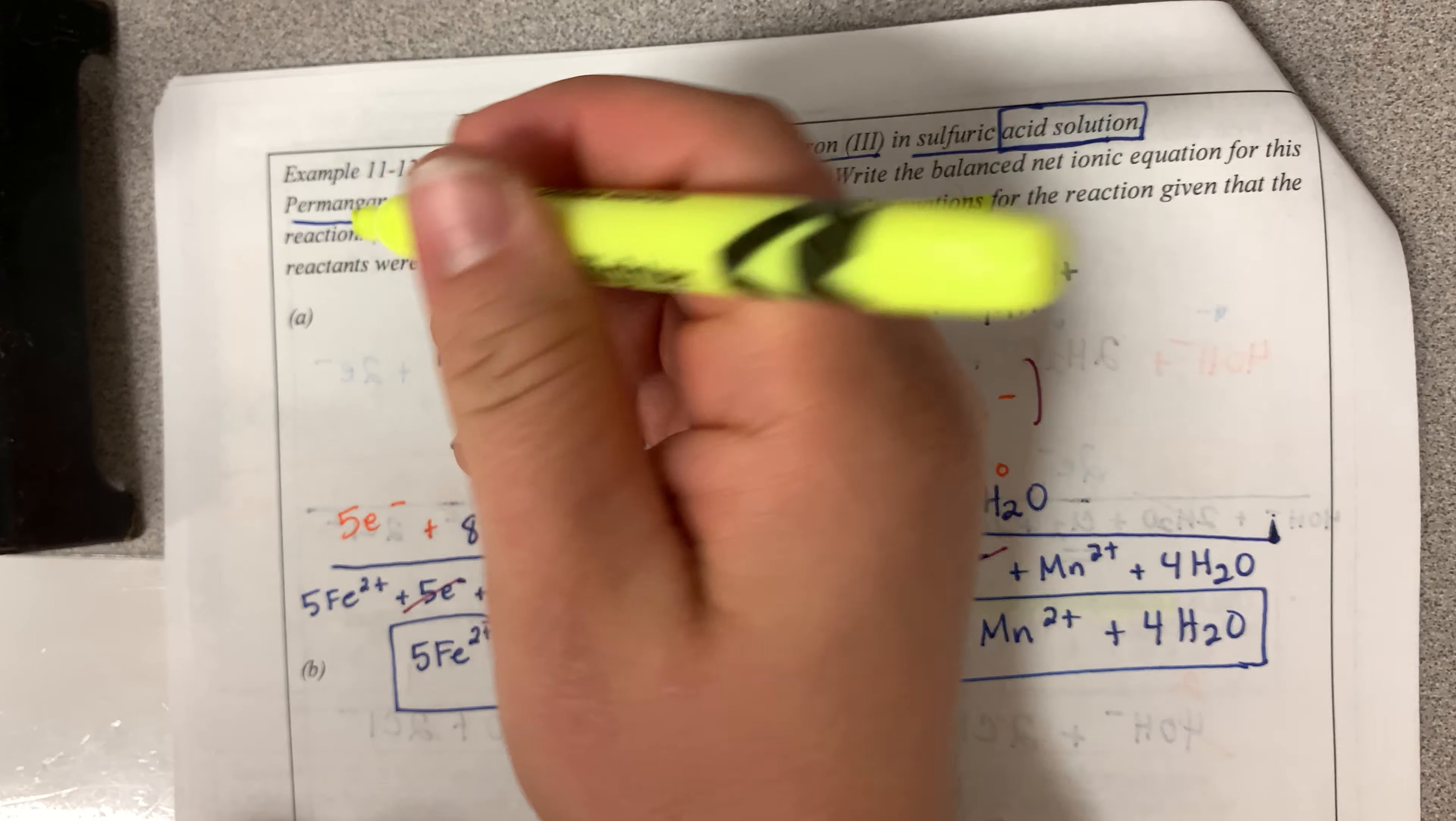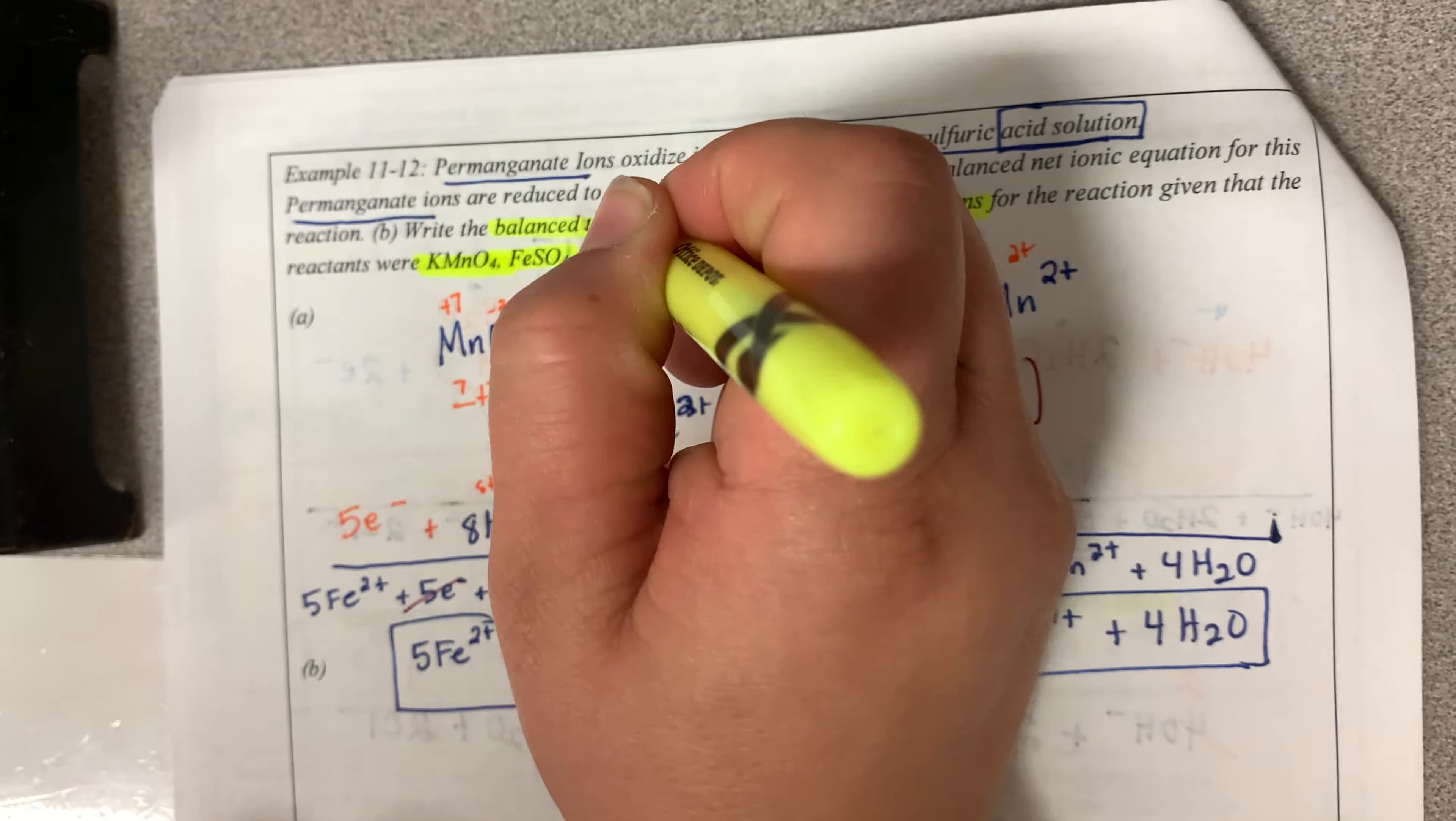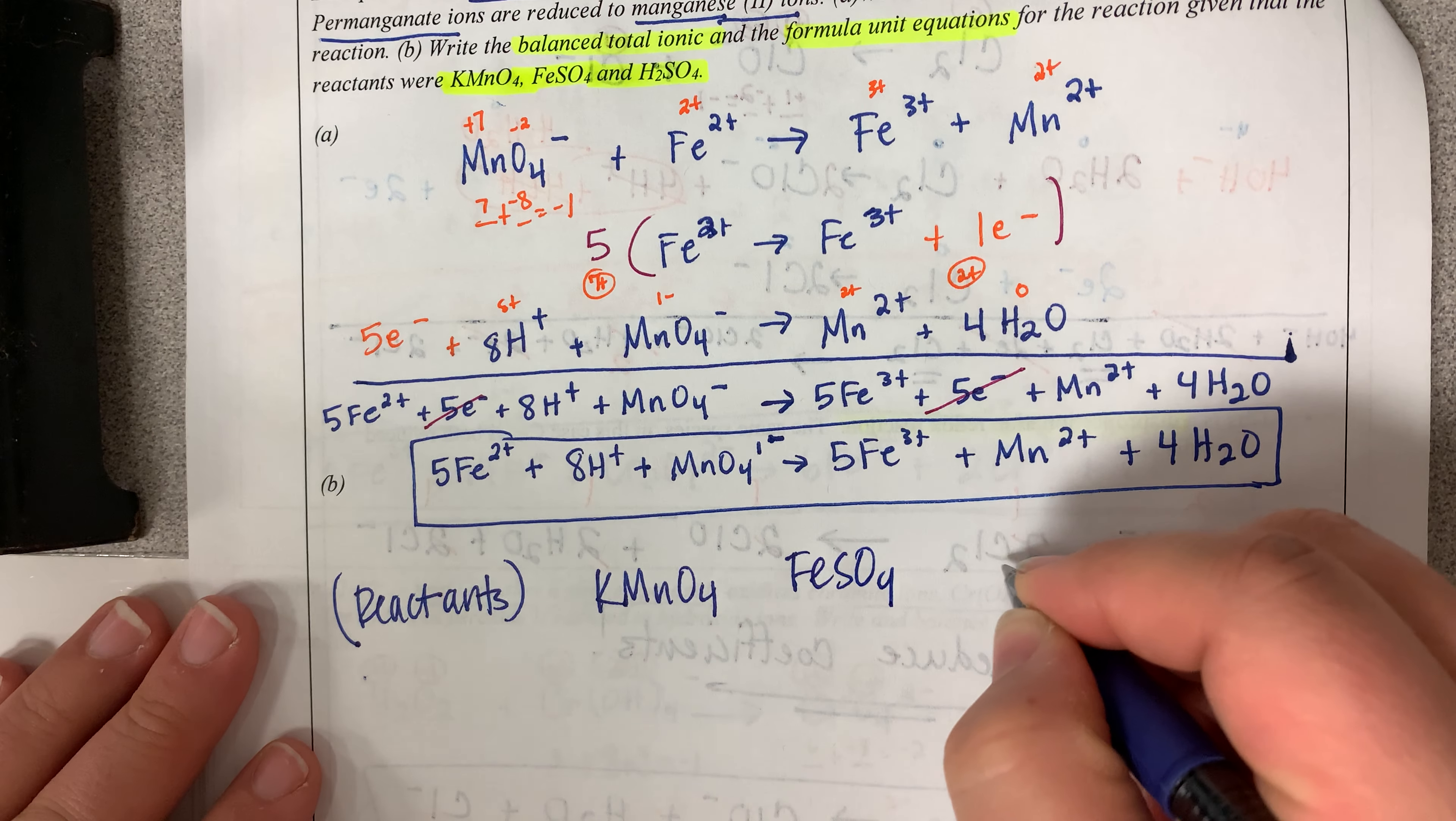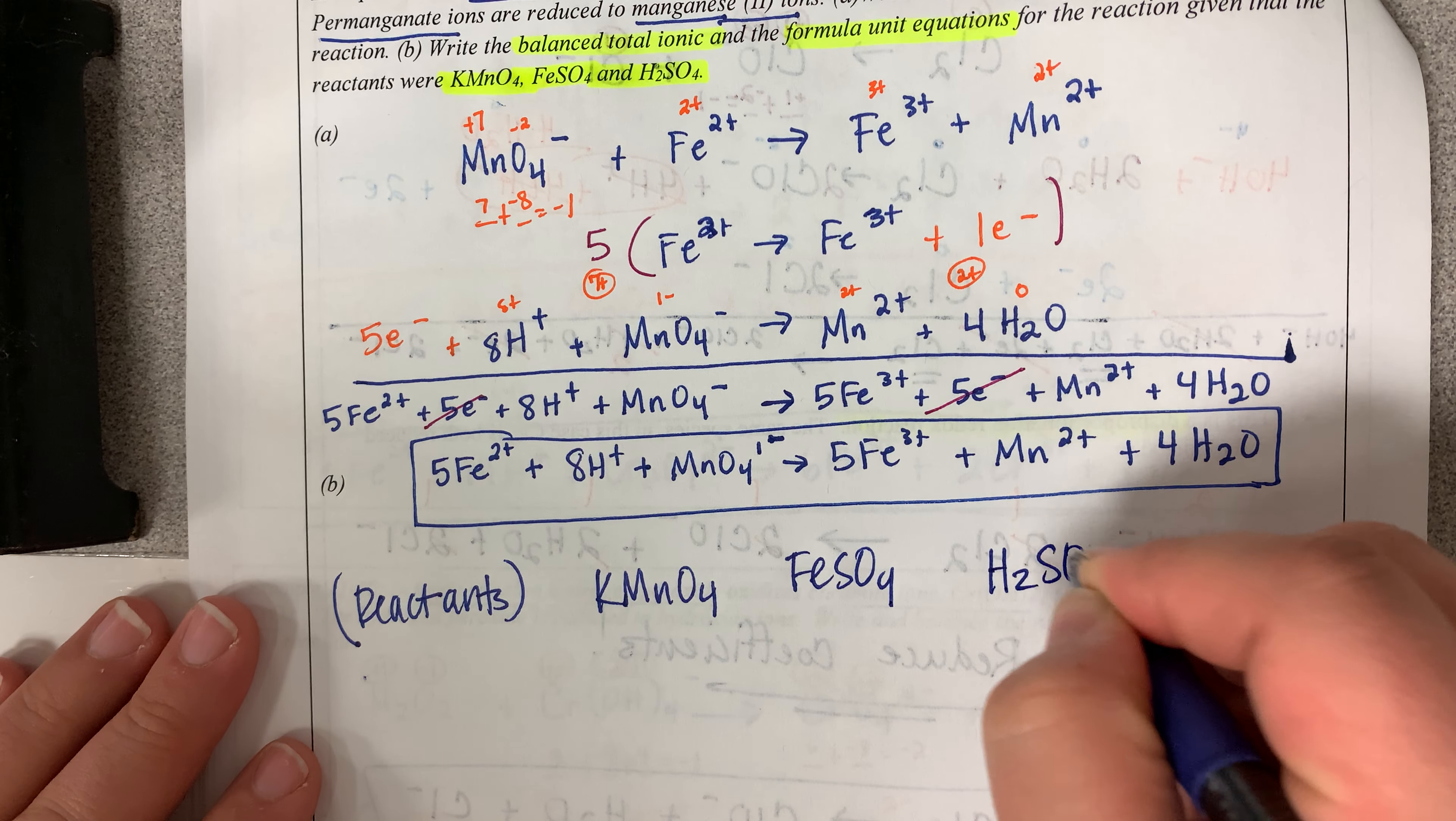and these are very important, KMnO4, FeSO4, and H2SO4. So I'm just going to write that down here. So KMnO4, FeSO4, and H2SO4.